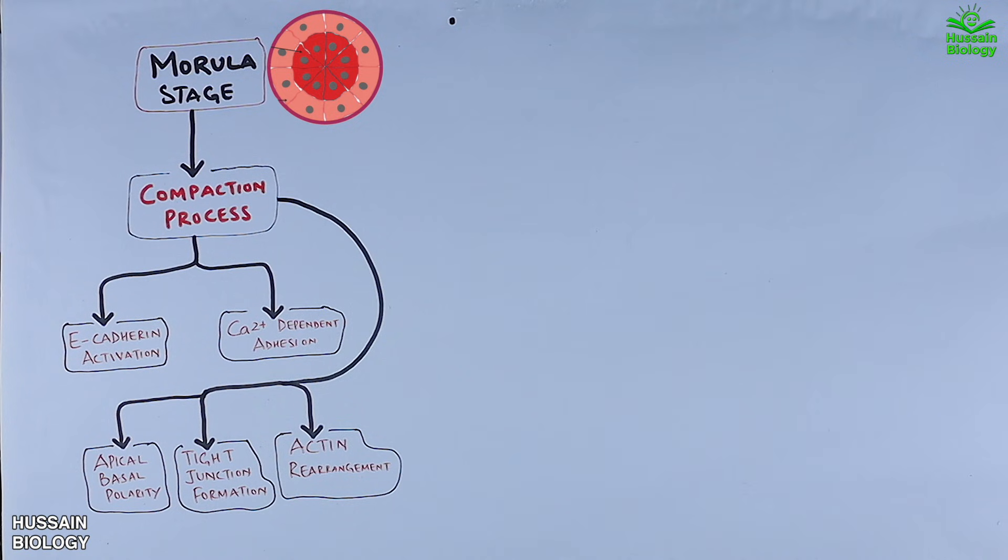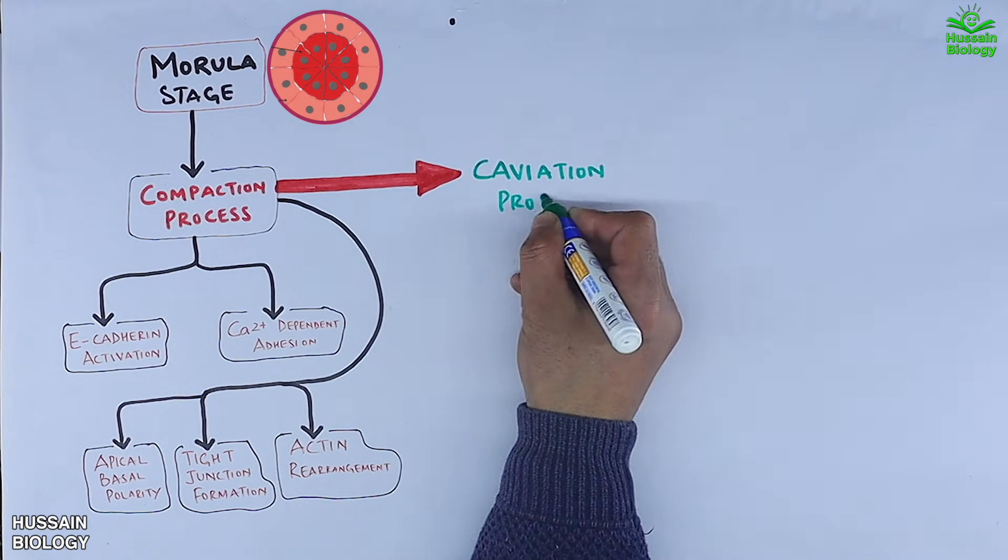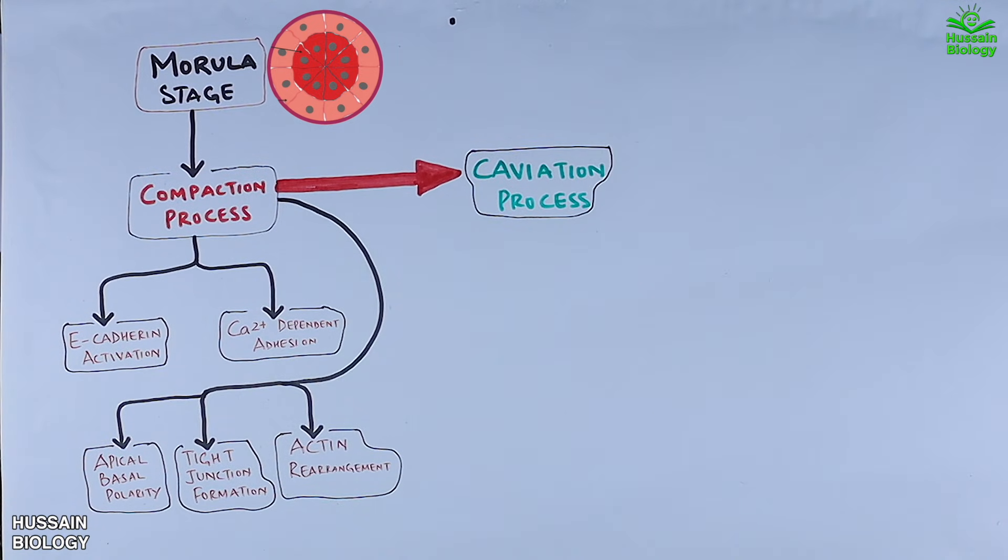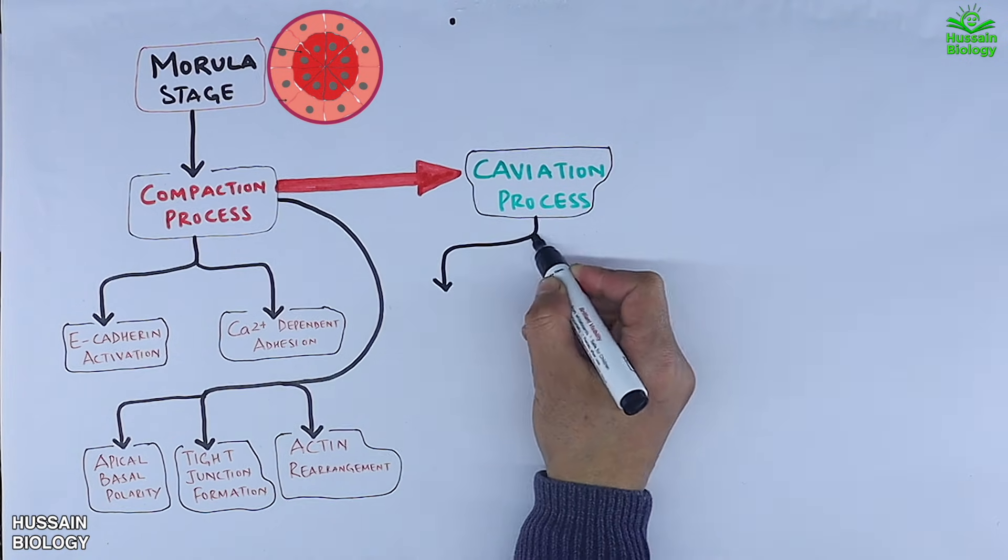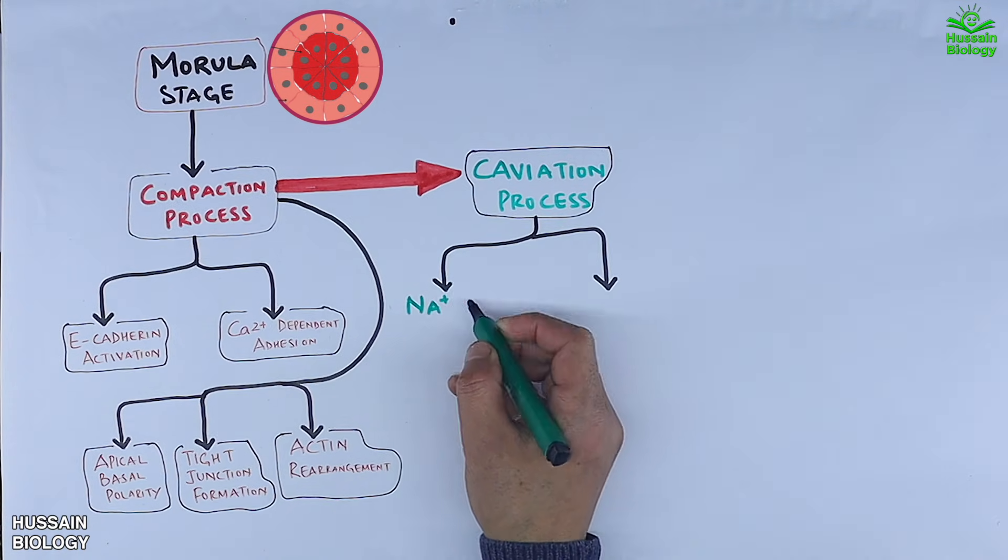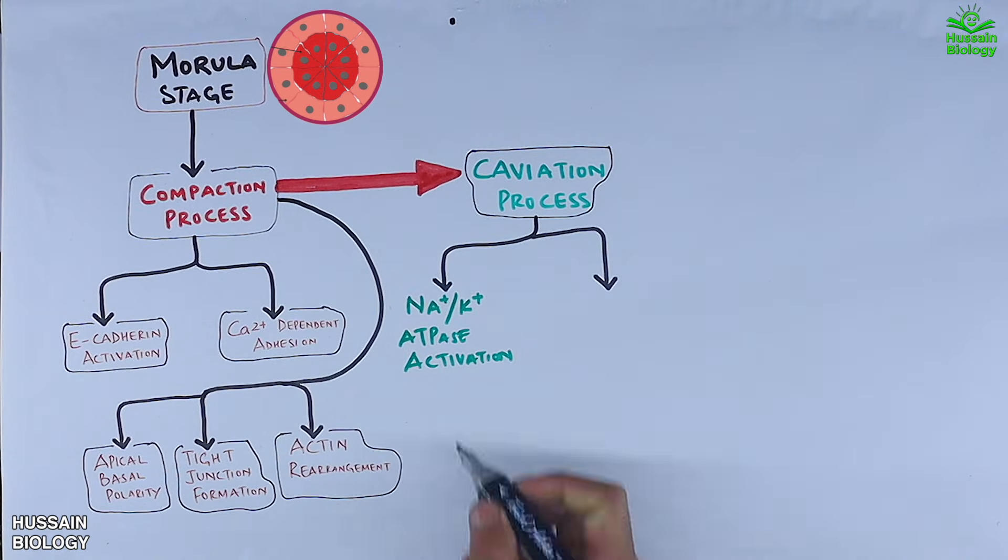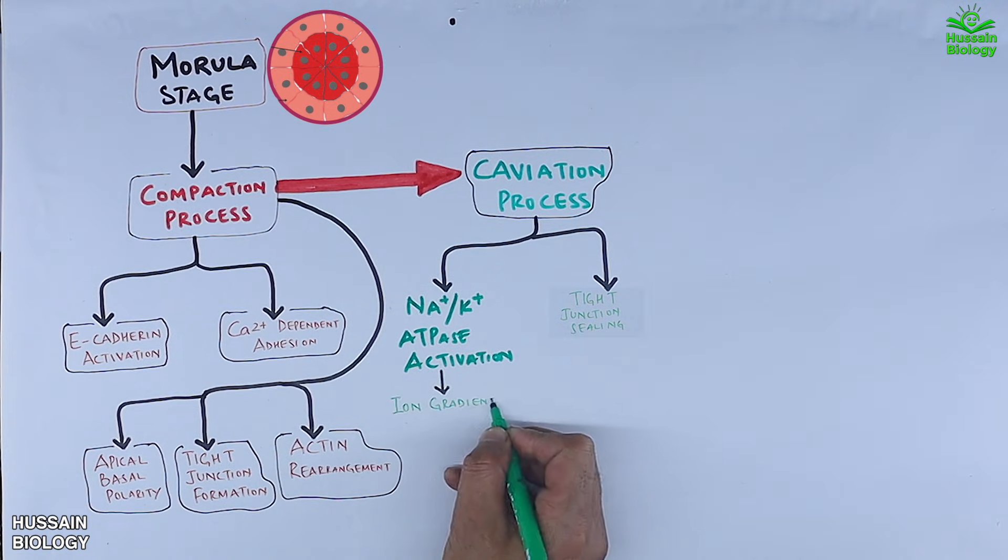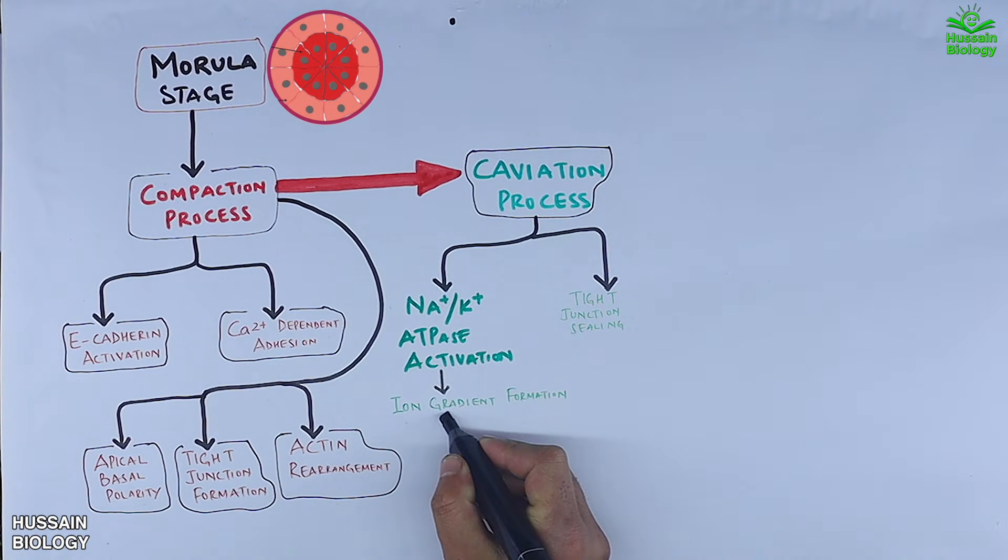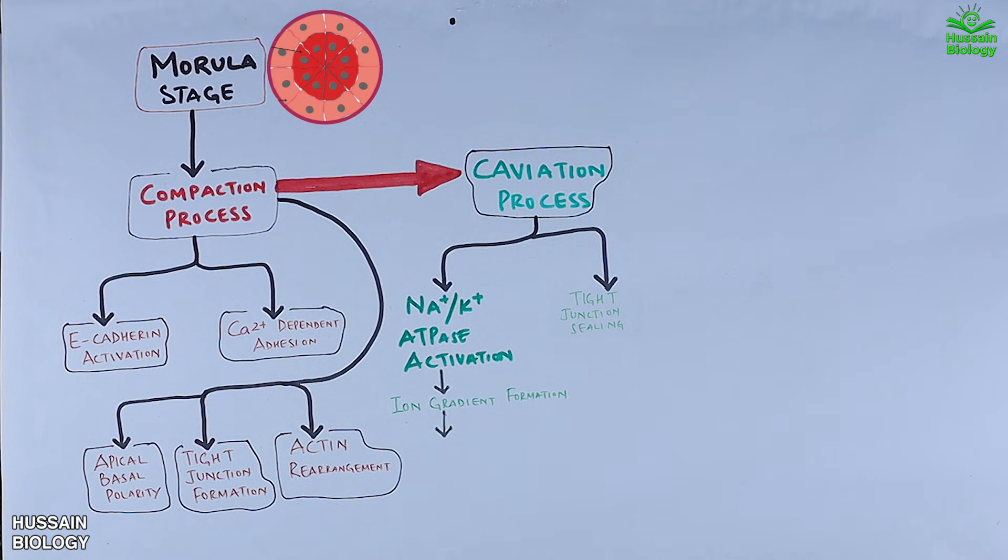Now let's move on to the cavitation process. The cavitation process involves two key mechanisms working together: sodium potassium ATPase activation and tight junction sealing. The sodium potassium ATPase activation actively pumps sodium ions across the cell membrane, creating an ion gradient. As a result of this gradient, water follows the sodium ions into the forming cavity, leading to water retention.